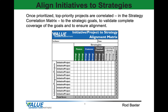Now that the work of prioritizing the initiatives and projects is complete, it's time to align the initiatives and projects with the strategic goals and objectives. The alignment element is intended to determine if there are any gaps between the prioritized initiatives and the strategic goals. If gaps exist, then additional or different initiatives and projects must be identified and selected to eliminate the gaps and ensure successful achievement of our strategic goals.